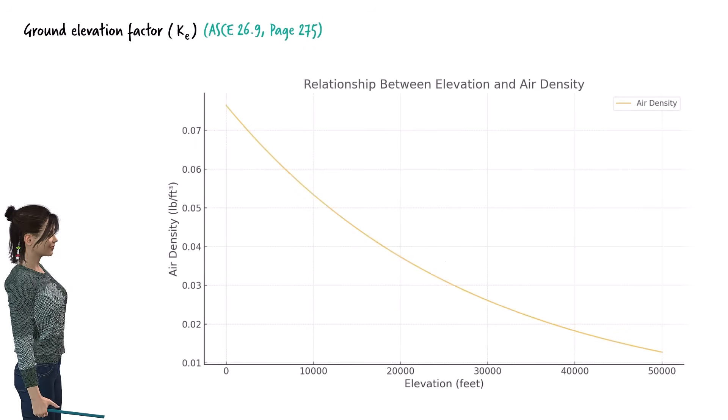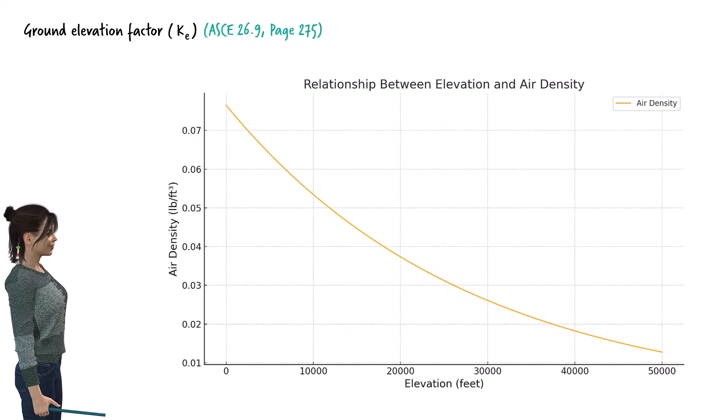As elevation increases, air density decreases, resulting in a decrease in wind pressure on structures. ASCE incorporates the ground elevation factor in the wind pressure equation to account for this reduced wind pressure at high elevations.